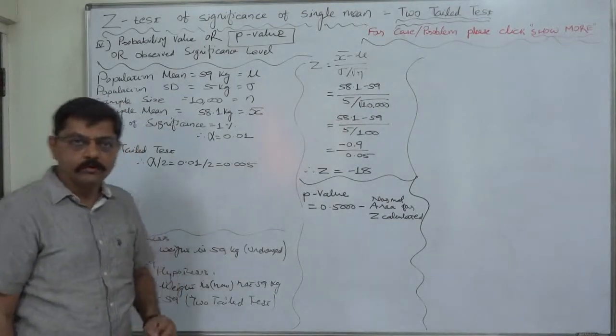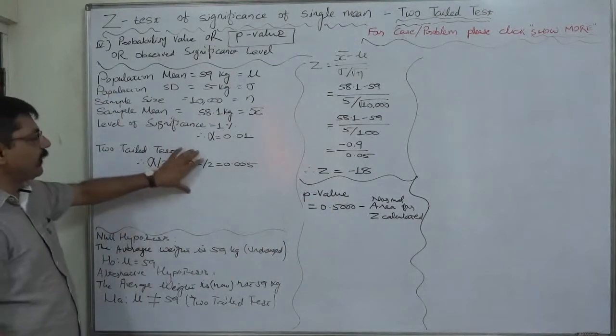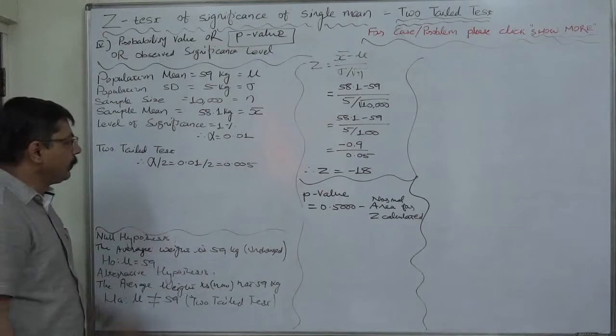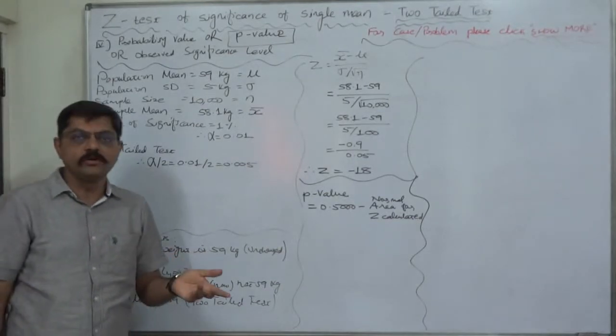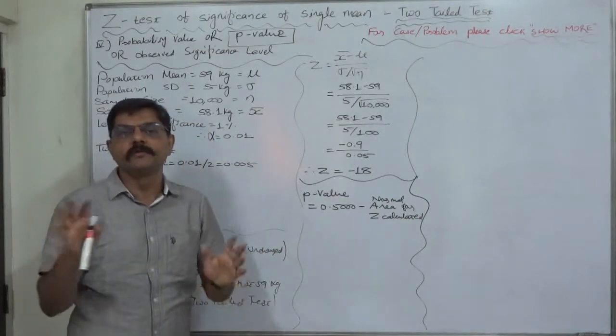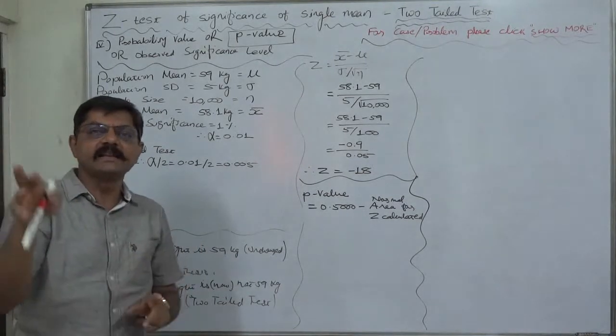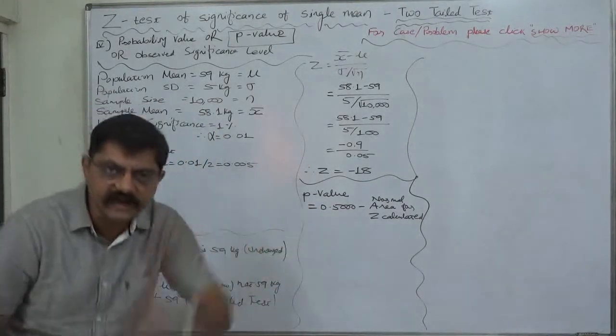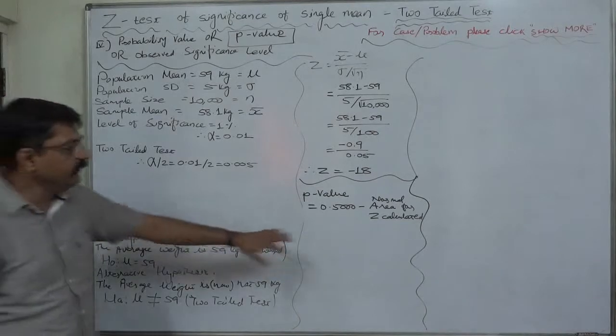What is to be done with the p-value? We need to compare this p-value with alpha or alpha by 2. If it is two-tailed test, we have to compare it with alpha by 2. If it is one-tailed test, we have to compare it with alpha. Here, the method of conclusion is exactly opposite to the comparison of observed value and critical value of test statistic. In that case, if calculated value of z is greater than critical value, we reject the null hypothesis. In this case, if p-value is less than alpha by 2 in case of two-tailed test or alpha in case of one-tailed test, then we reject the null hypothesis.